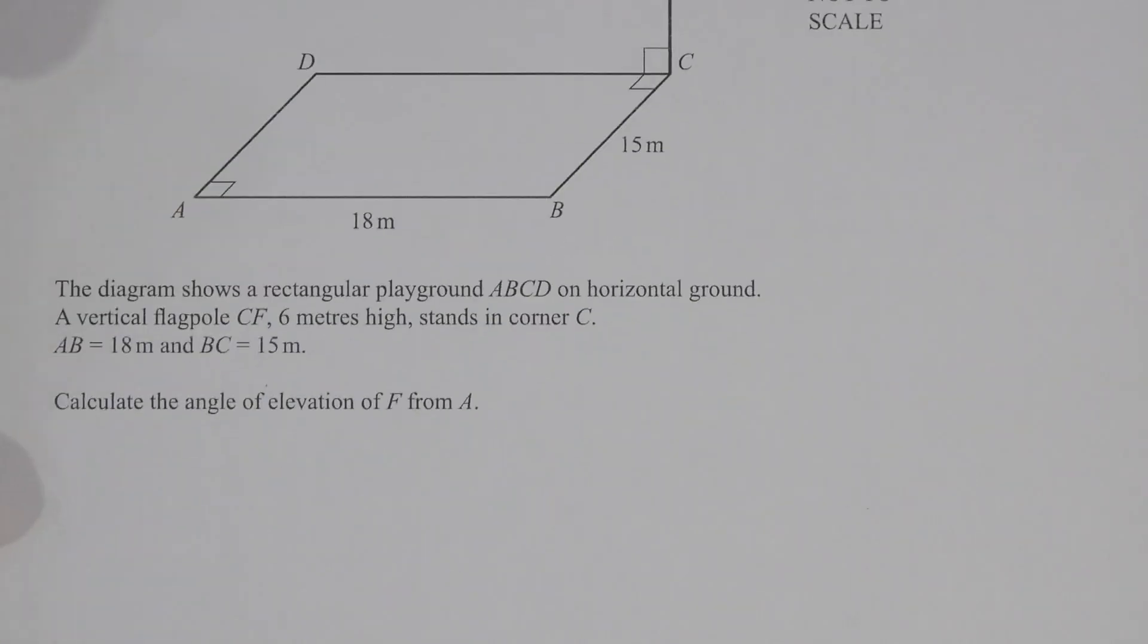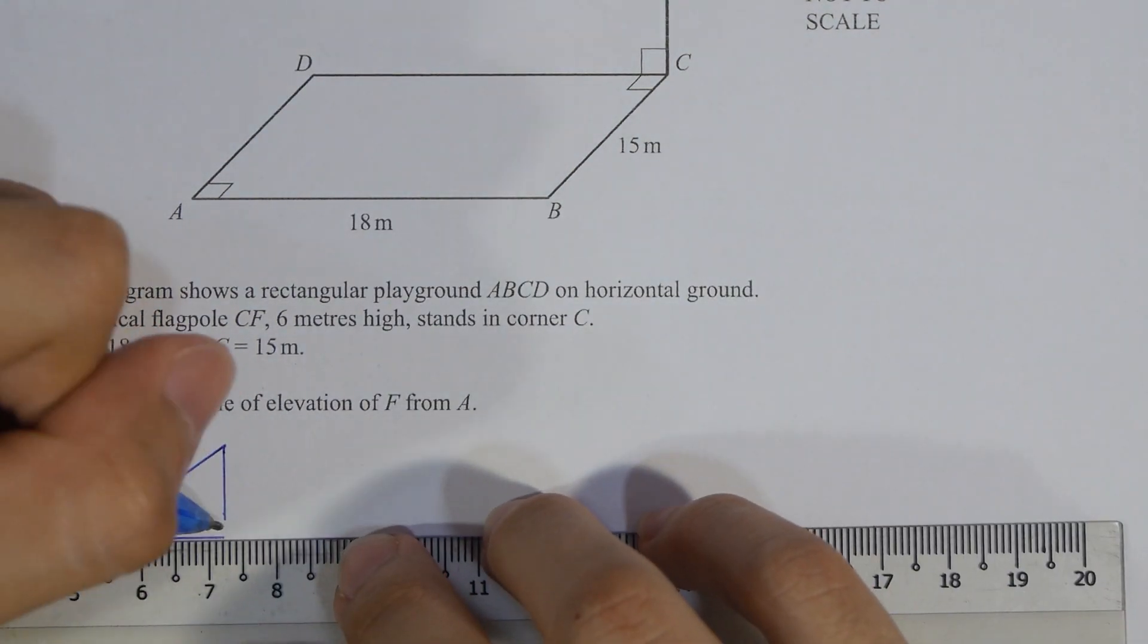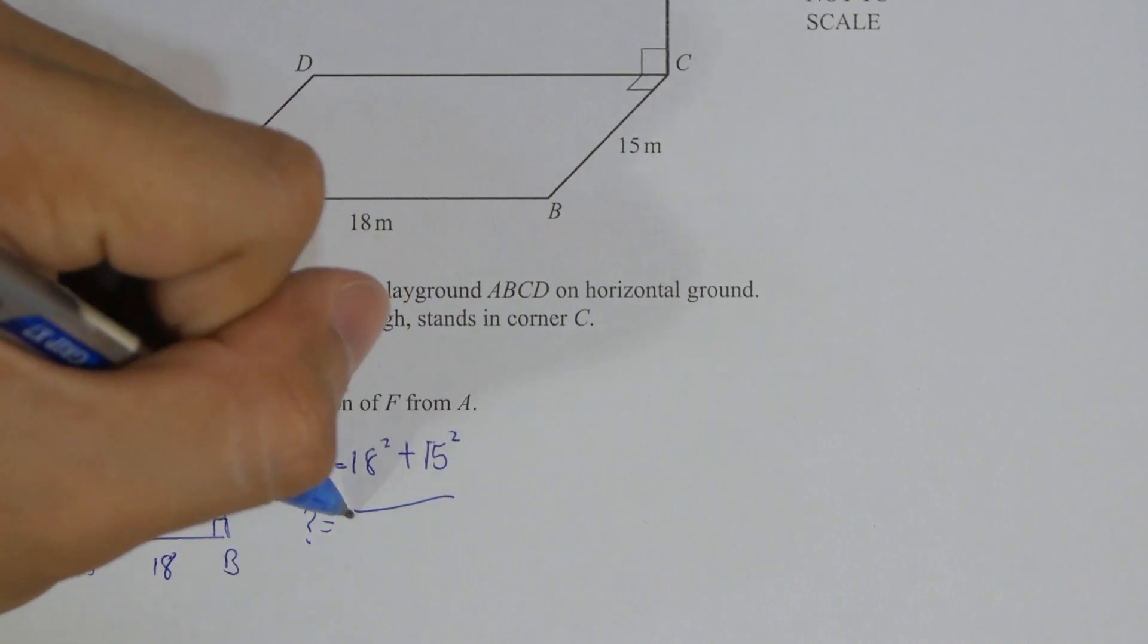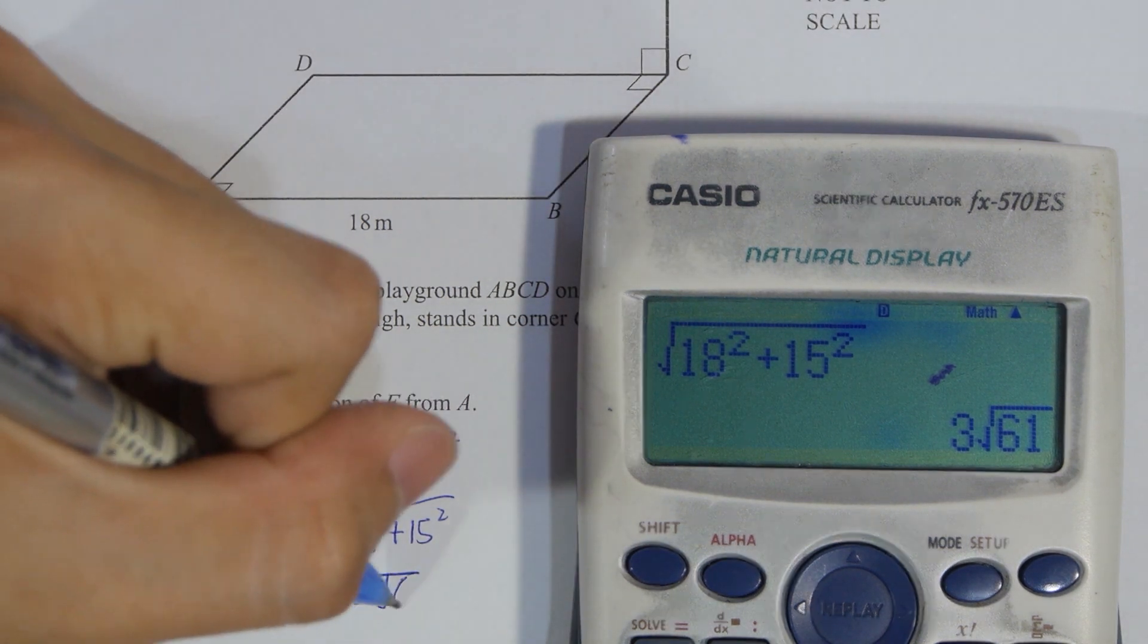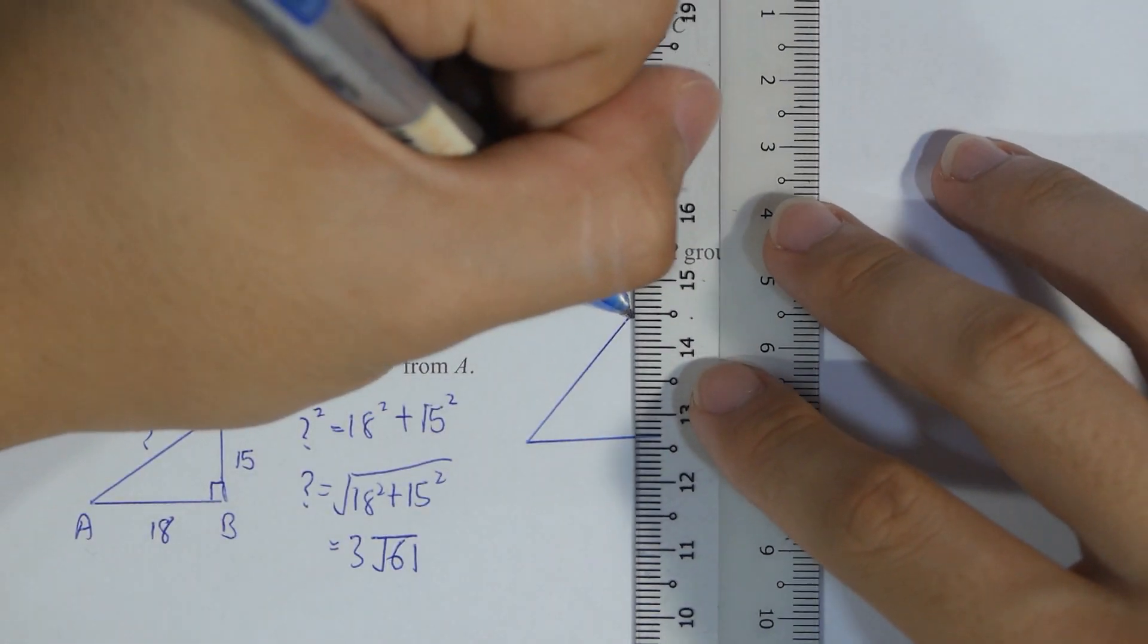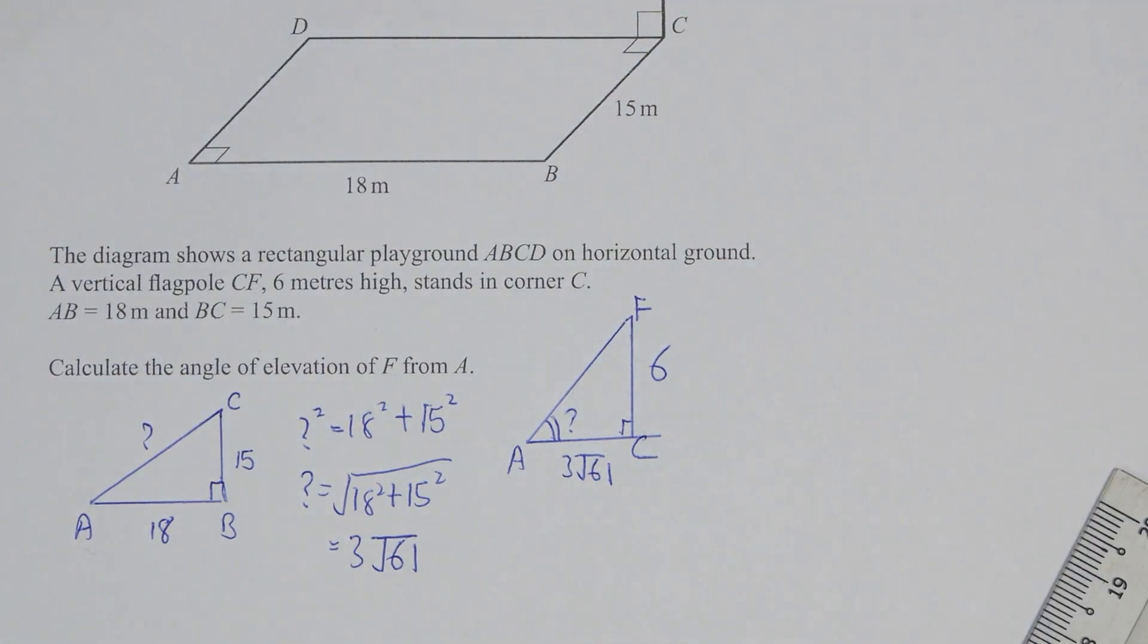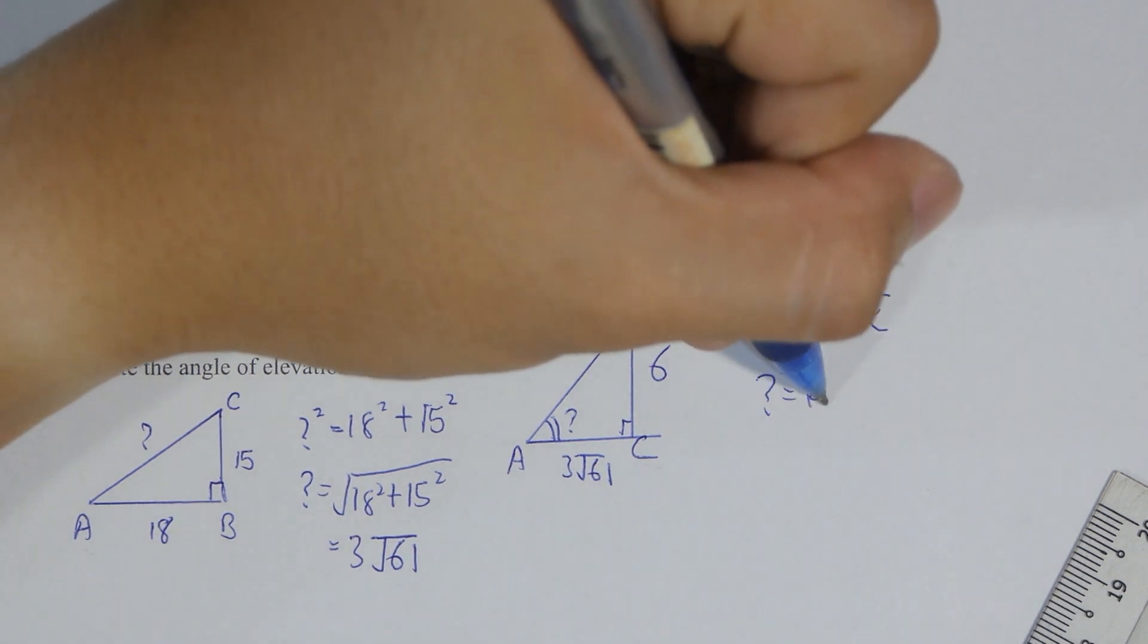Question 18. First I find the AC's value first, which is the hypotenuse of the triangle ACB. After calculation you will get 3 square root 61. With the AC's value we can now use the tangent, as FC is given, which is the opposite, and AC is the adjacent. So tangent inverse 6 over 3 square root 61, then we get the angle as 14.36.